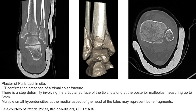And another case before finishing: this is also a case of trimalleolar fractures, where we can see the fracture line going across the medial malleolus, lateral malleolus, and the posterior malleolus, as shown in the 3D image and the coronal image of the CT of the ankle.